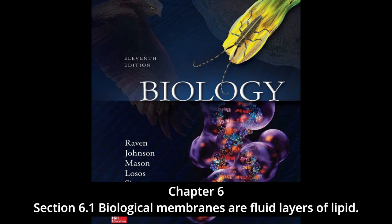A fat molecule has three fatty acid chains, one on each backbone carbon; because these chains are non-polar, the fat molecule is not water soluble. A phospholipid, by contrast, has only two fatty acid chains. The third backbone carbon attaches instead to a highly polar organic alcohol via a phosphate group, making one end of the molecule strongly non-polar (water insoluble) and the other strongly polar (water soluble). Phospholipids are therefore diagrammed as a polar head with two non-polar tails.